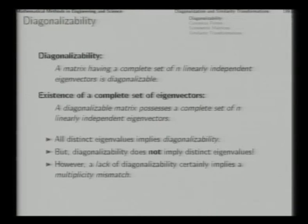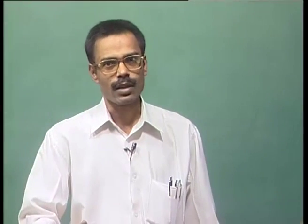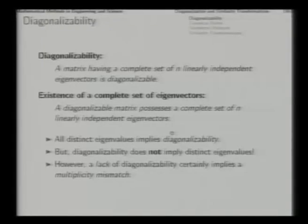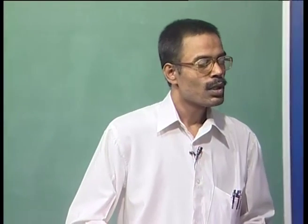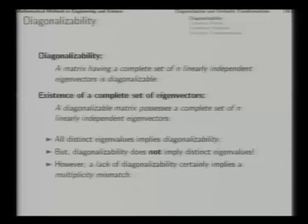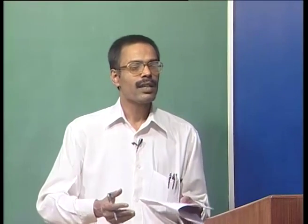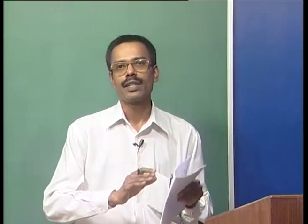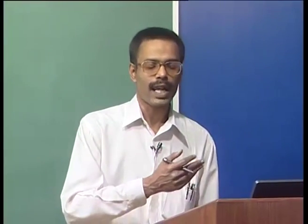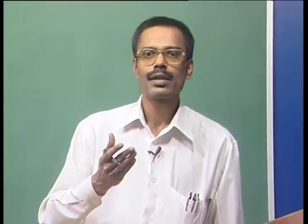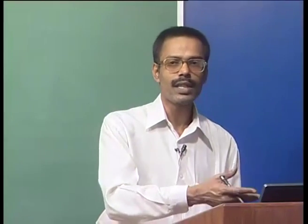If the matrix is not diagonalizable, then there is certainly some multiplicity mismatch, and for that mismatch to occur the algebraic multiplicity must be greater than 1. Diagonalizability is not possible for all matrices, and this gives rise to two questions: what simplified representation is possible for all matrices, and for what kind of matrices is diagonalizability guaranteed? The first is the issue of canonical form and the second is the question of symmetric matrices.